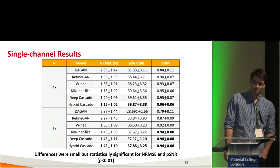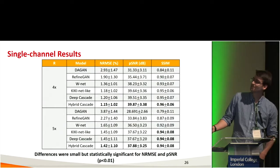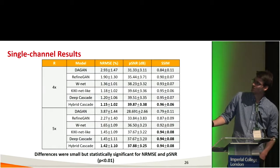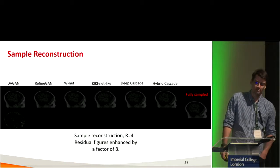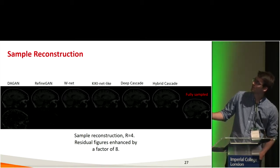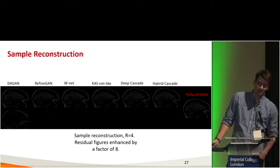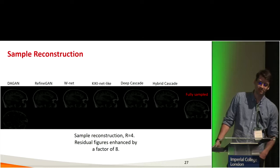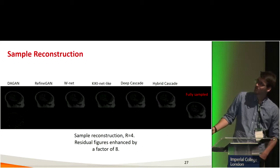Here are the results for the single-channel experiment. In both acceleration cases, hybrid cascade achieved the best results across all three metrics. For structural similarity, it was pretty much a tie at speed-up factor 5. The differences were small but statistically significant for NRMSE and peak SNR. Looking at sample reconstructions — which are GIFs showing the full volume — the top row shows reconstructions with different methods, the right side shows the fully-sampled reference, and the bottom row shows residual figures enhanced by a factor of 8. Except for DAGAN, all networks did a pretty good job.